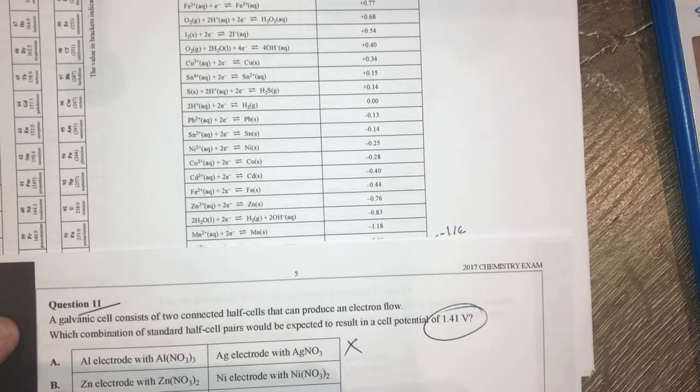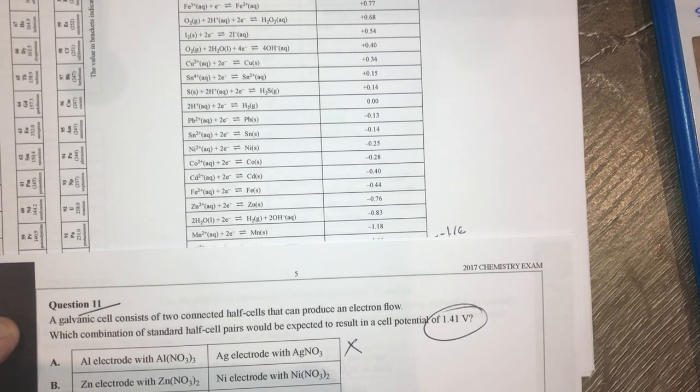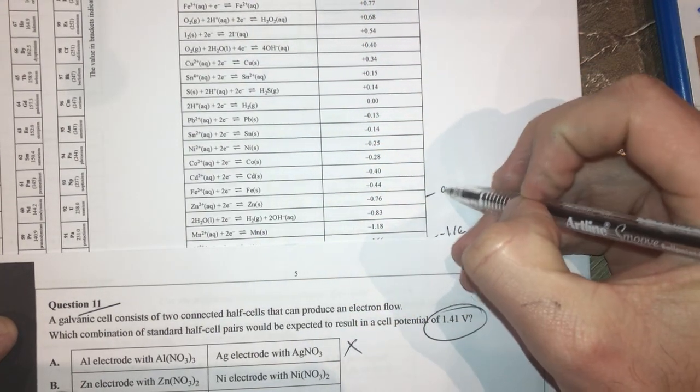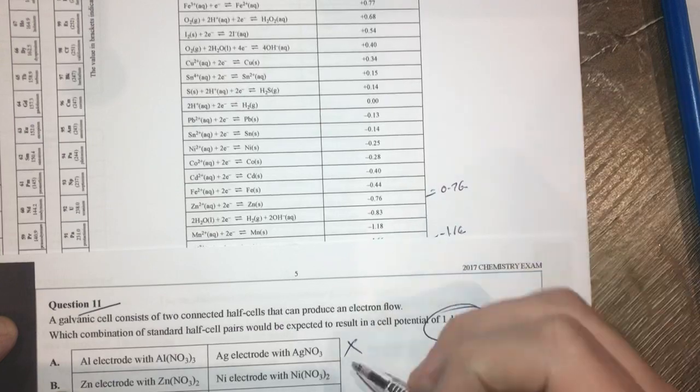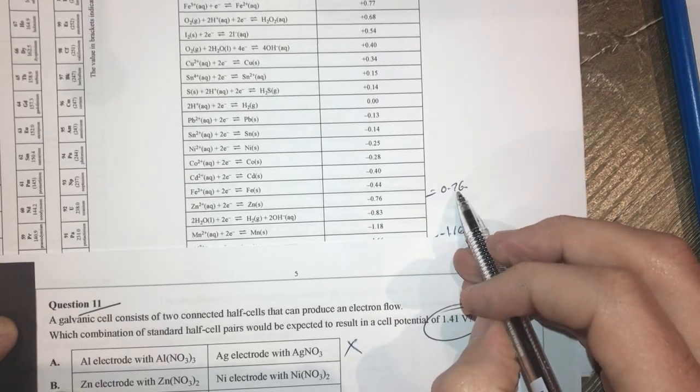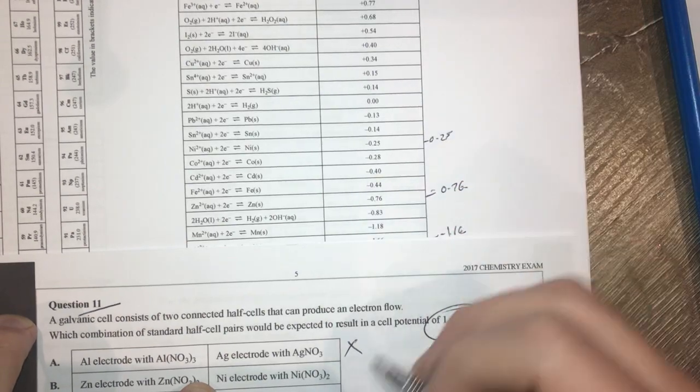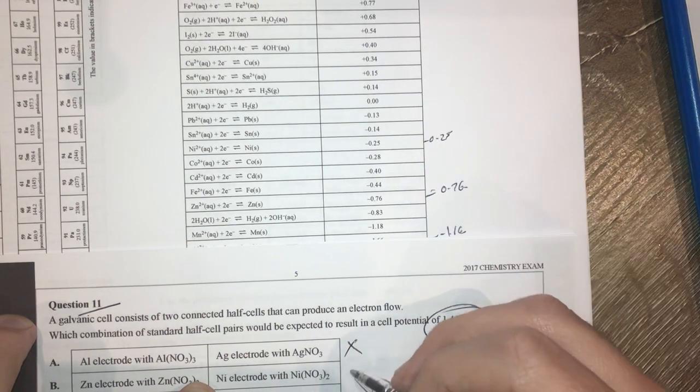Zinc and nickel. Zinc is sitting at negative 0.76. Nickel is sitting at negative 0.25. Again, that's not going to produce enough voltage because there's not much difference there.